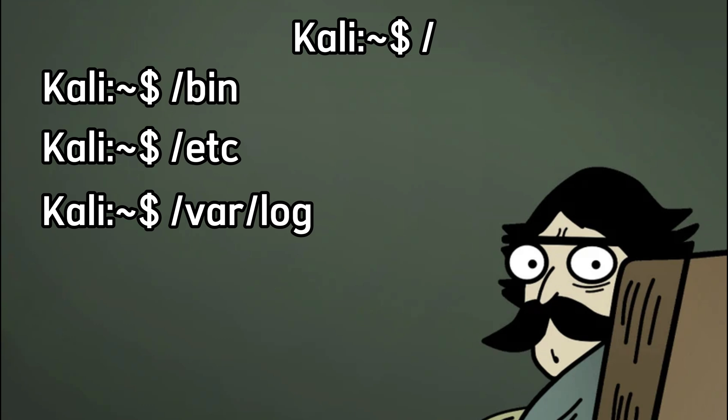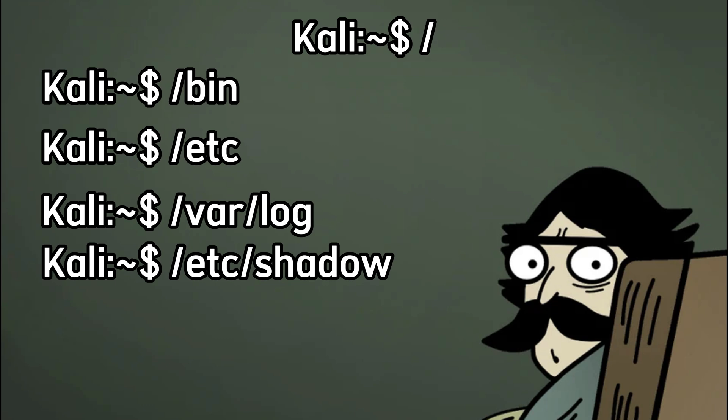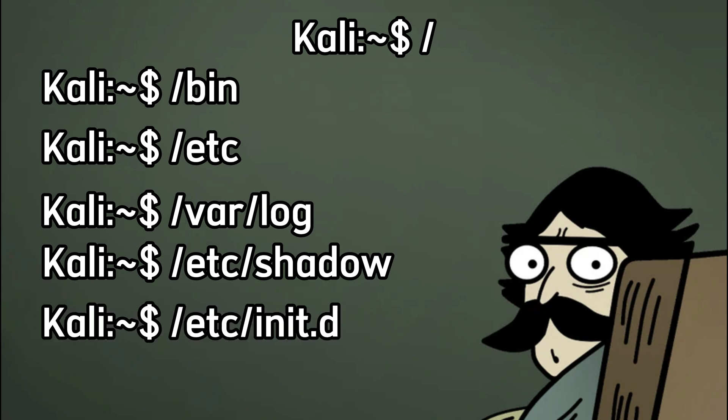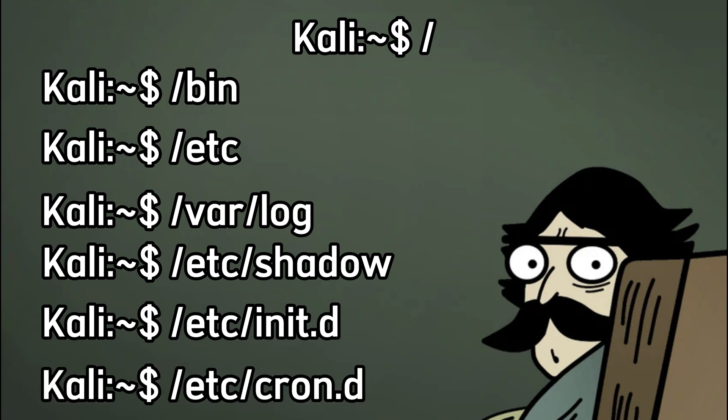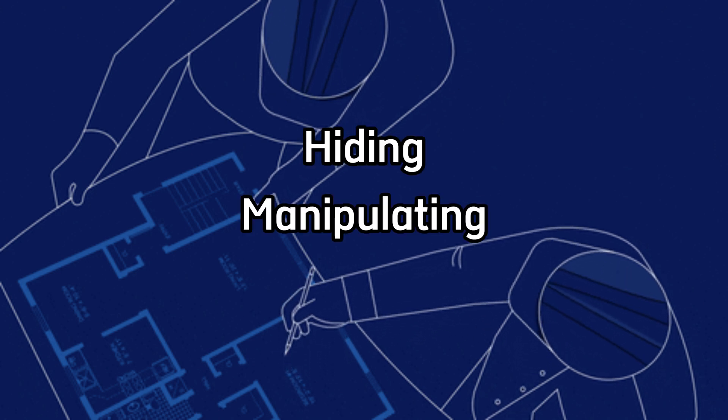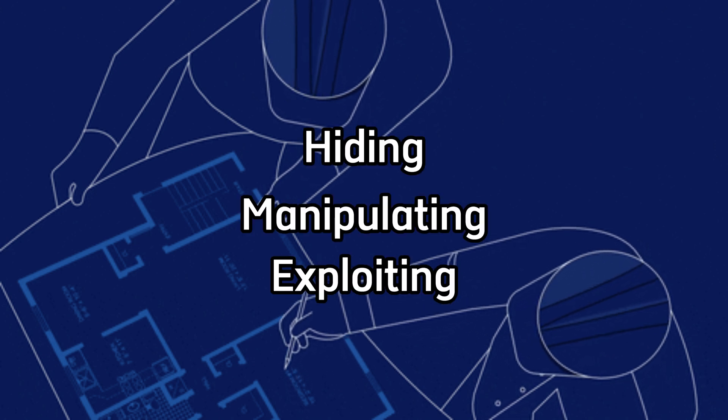Want to find the shadow file? It's in /etc/shadow, storing password hashes — guarded, but not unreachable. Need persistence? Drop a script in /etc/init.d, or hijack a cron job from /etc/cron.d. Understanding the Linux file structure is like knowing the blueprints of every building you plan to break into. Once you know where everything lives, hiding, manipulating, and exploiting becomes second nature.